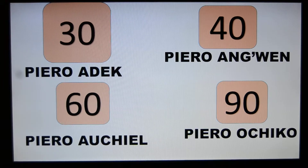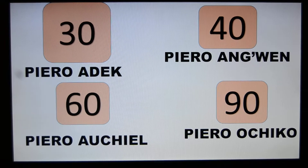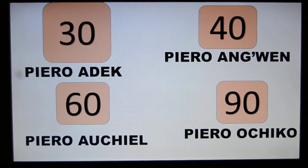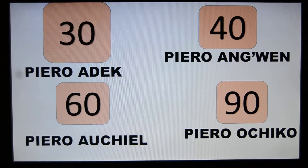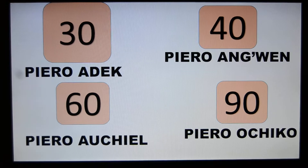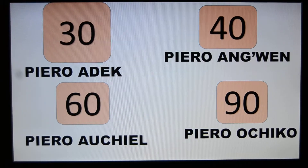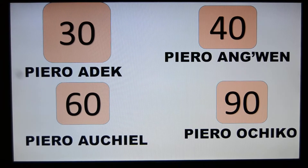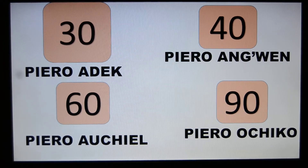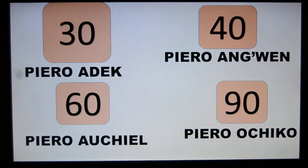If you look at the 30s you get PIERO ADIK — PIERO ADIK is three tenths. ADIK is three, remember. PIERO AGUEN is four tenths, PIERO ABICH is five tenths, PIERO AUCHIEL is six tenths. So for example, if you wanted 65, it would be PIERO AUCHIEL GI ABICH. PIERO OCHIKO GI ACHIEL — what would PIERO OCHIKO GI ADIK be? Exactly — that is 93.